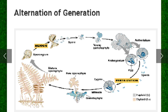Spores germinate to produce the gametophyte generation, and gametes fuse with each other to form the sporophyte generation. The haploid form produces the diploid plant body, and the diploid form produces the haploid plant body — meaning the sporophytic body has the ability to produce the gametophytic body and vice versa. This process is called alternation of generations, where the haploid and diploid generations alternate with each other.